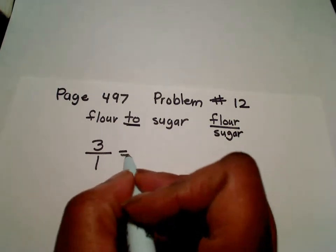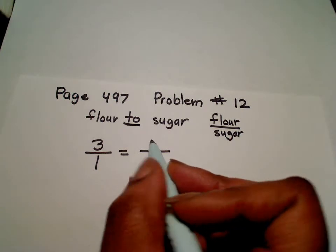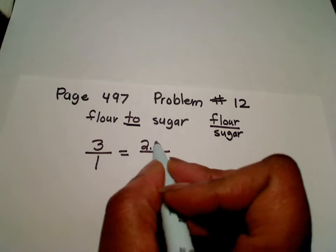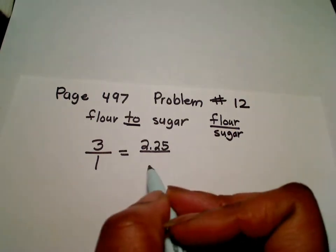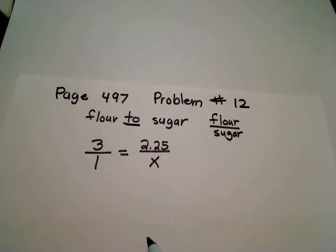With a ratio, we need to set up another ratio, but remember, this has got to represent flour to flour, which they said is two and a fourth, so I'm going to change that to 2.25. Makes it easier to use my calculator.